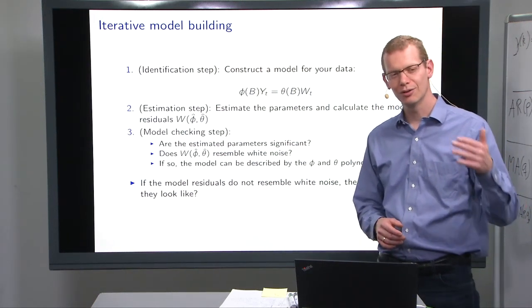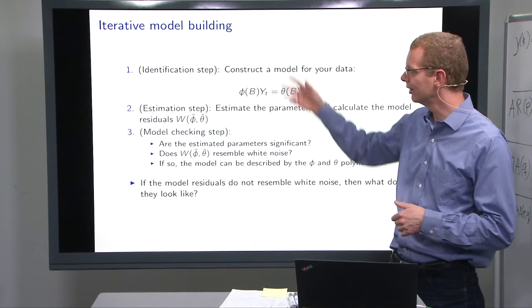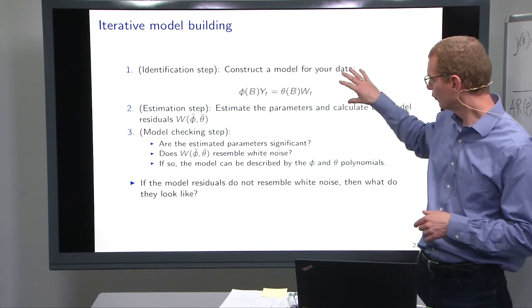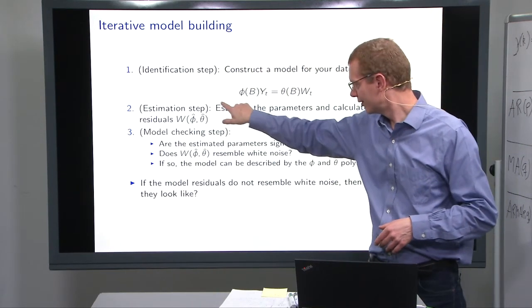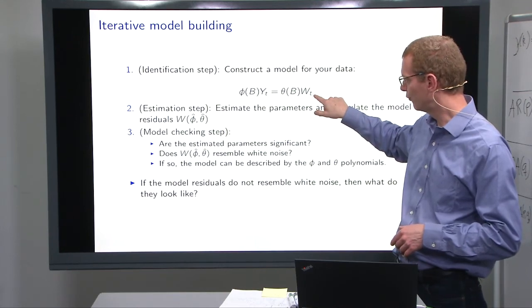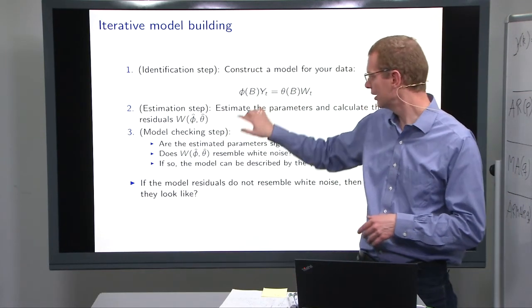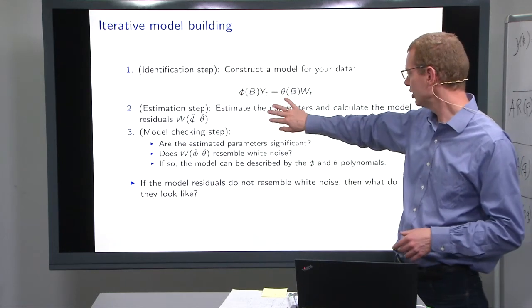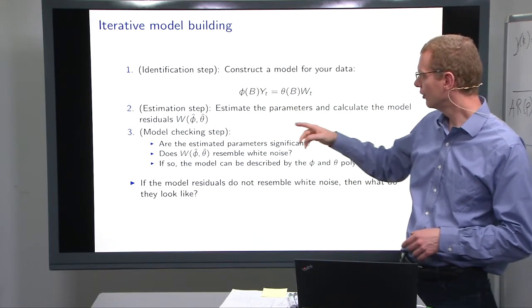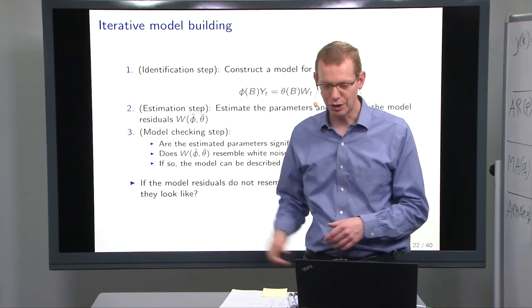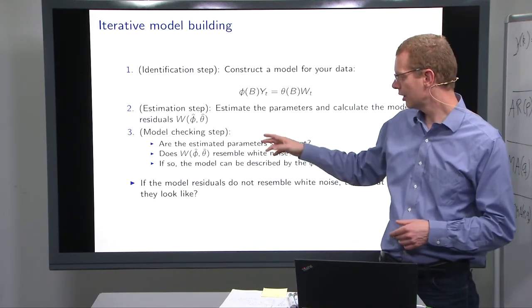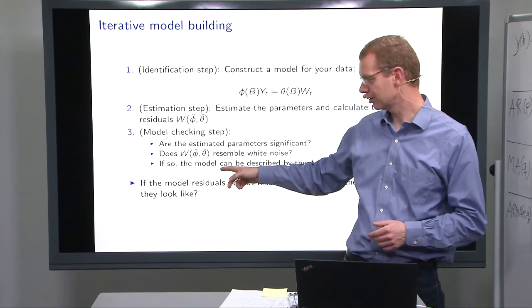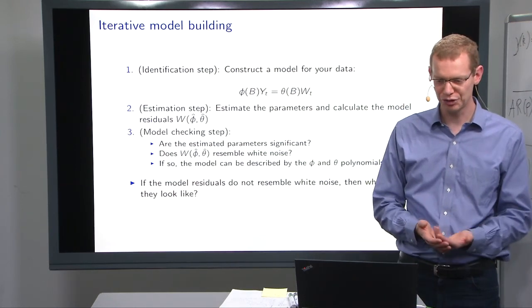So this about doing one step at a time is what I call iterative model building. You first look at your data and you estimate, well, I need, say, an AR1 model. Then you specify that model. You estimate parameters in that model. You get the corresponding residuals from that model. And then you look at the correlation structure, the autocorrelation function of those residuals.